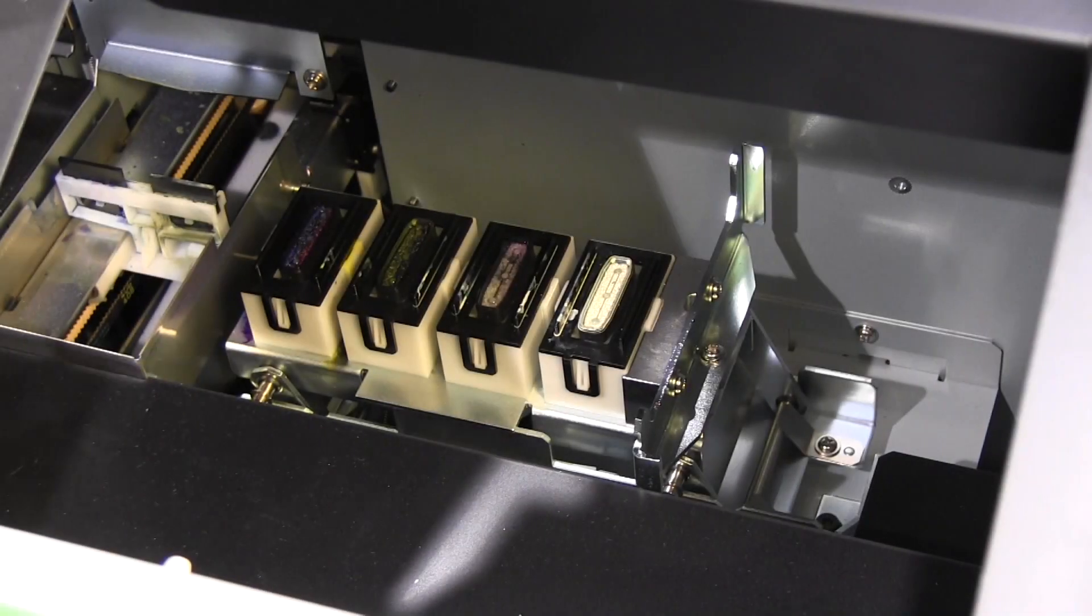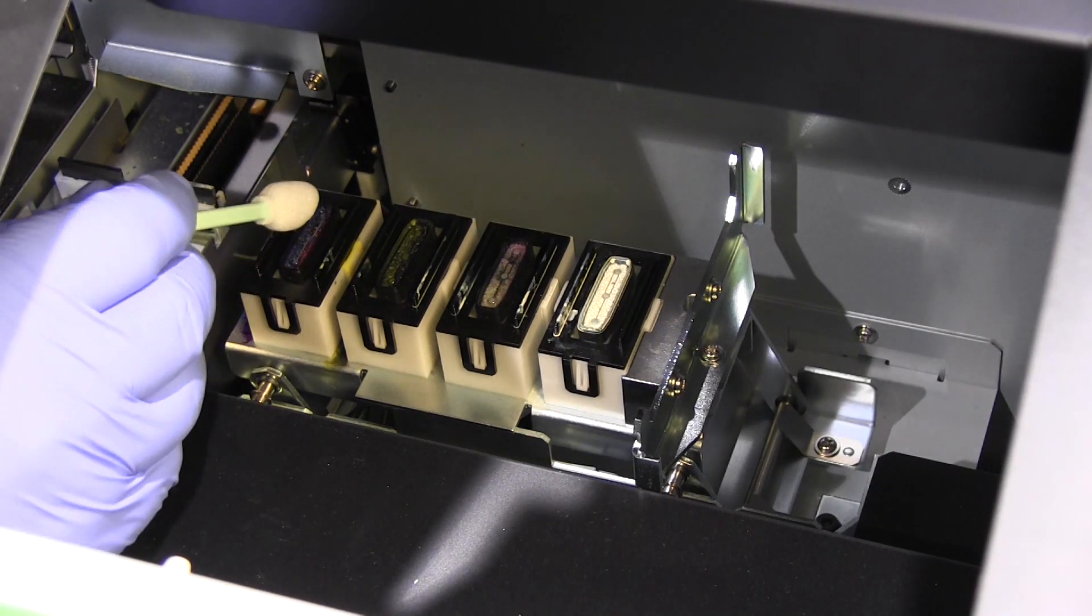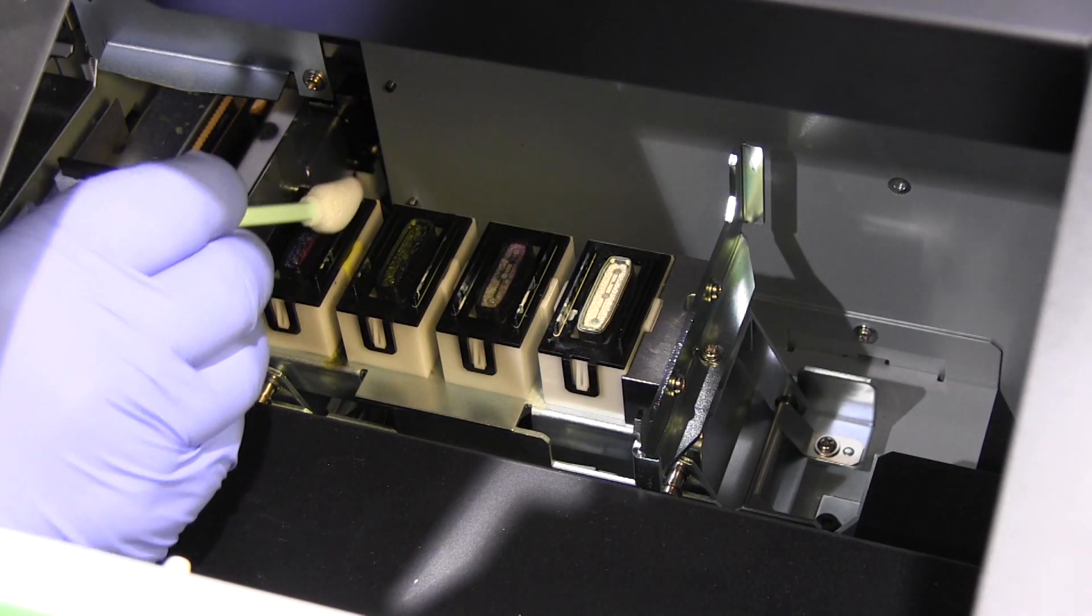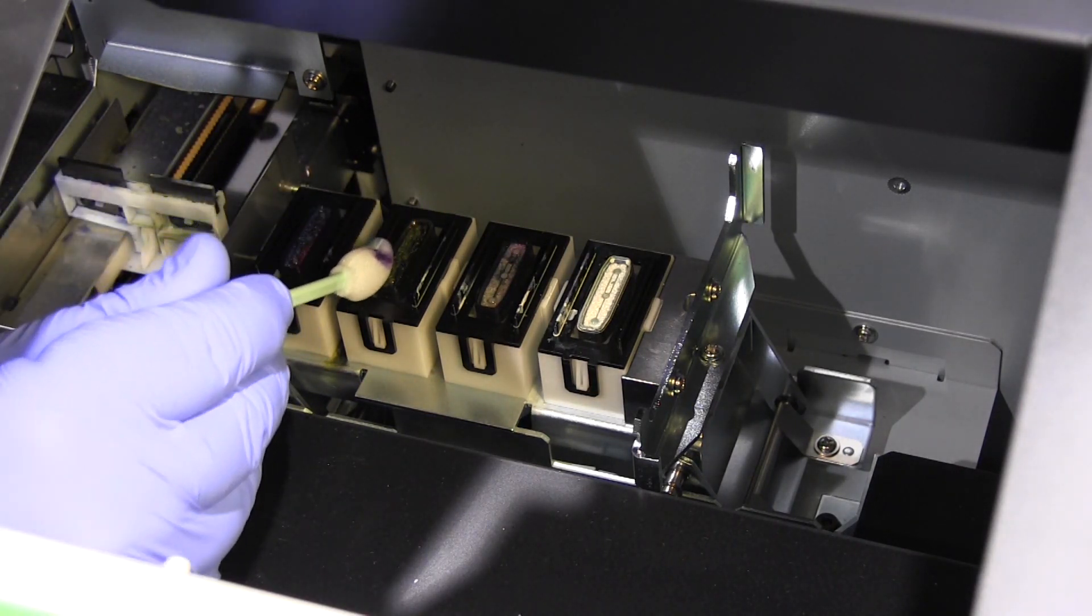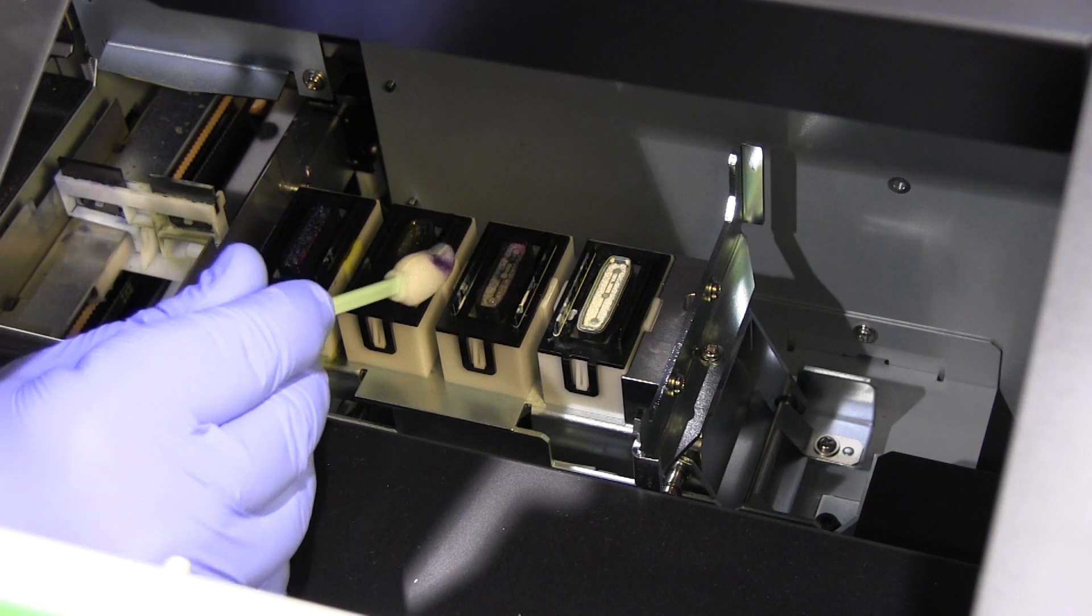Next we move on to the cap tops. The cap top makes an airtight seal on the underside of the print head when it is not in use. You will need to clean around the gasket to ensure that the seal is clean and working properly.